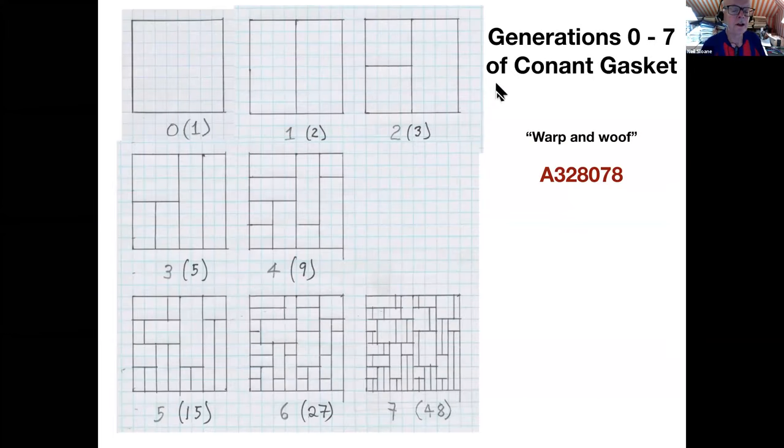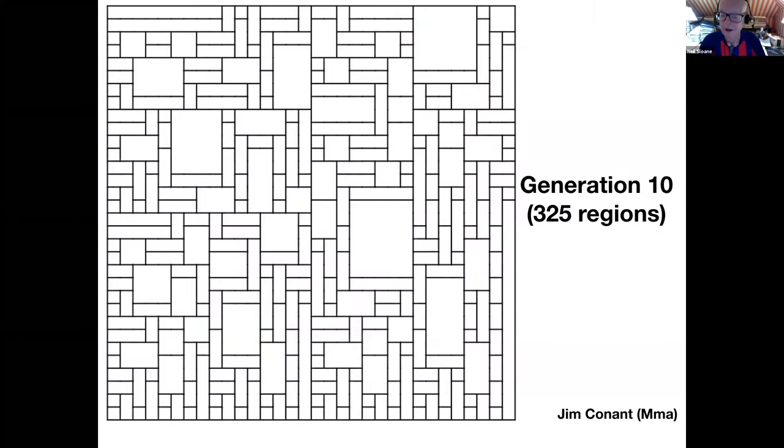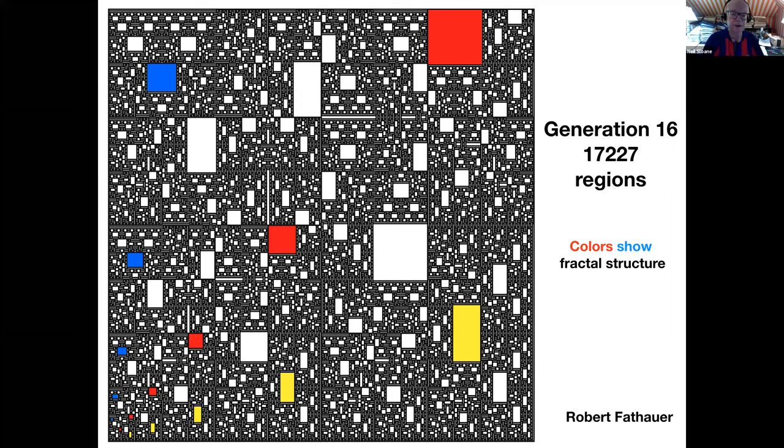You go along in your horizontal vertical line until you hit the next perpendicular line. And when you do, you disappear underneath and then you pop up again. It's a weaving process. That was the fourth generation, fifth, sixth, seventh. Here's the 10th generation. There are 325 regions. You can see they're getting smaller and smaller. And they are in fact a bit fractally because you can see that this square here is reproduced on a different scale here and so on. Robert Fathauer produced this beautiful colored picture of 16 generations when there are 17,000 odd regions. You can see the red squares show the fractal structure and the blue and the yellow and the white. So it's very fractally.